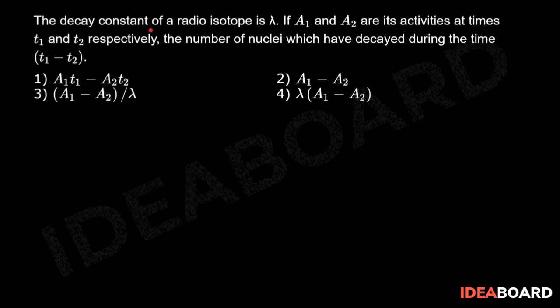The decay constant of a radioactive isotope is lambda. If A1 and A2 are its activities at times T1 and T2 respectively, find the number of nuclei which have decayed during the time T1 minus T2.